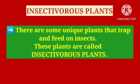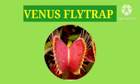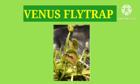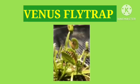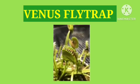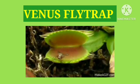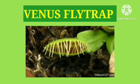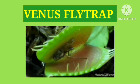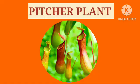The Venus Fly Trap is a small plant with leaves that attract insects. The leaves have stiff hair along the edges. Whenever an insect touches its hair, the leaf shuts instantly, trapping it inside. The insect dies inside the shut leaf and the plant absorbs the nutrients.